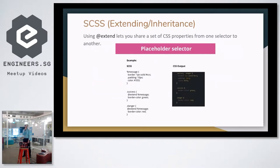We use @extend to share a set of CSS properties from one selector to another. For example, in SCSS we want to show a message with a border of 1px solid, a padding of 10 pixels, and a color of #333. We do it by adding @extend to different components — for success, we ensure it shows the message with a border color of green, and for danger, it shows an error message when the file doesn't load.